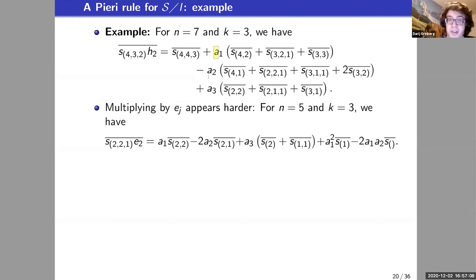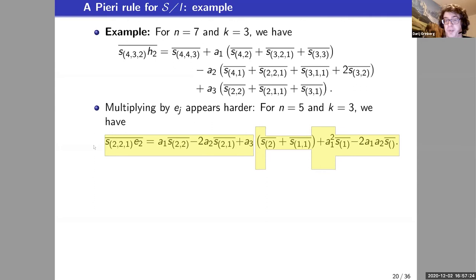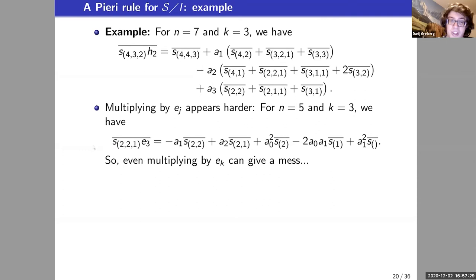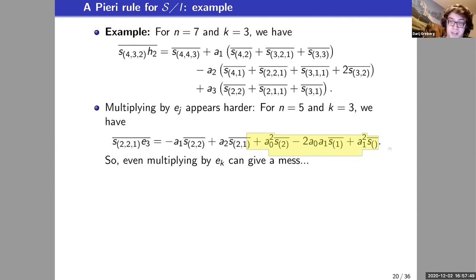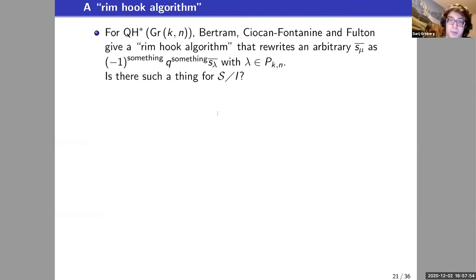Notice that the Littlewood–Richardson coefficients appearing here can be greater than one, so this is not a multiplicity-free rule. As for multiplying by an e instead of an h: in classical symmetric function theory there is a complete symmetry between the two; in cohomology there is still a symmetry (swapping k with n-k); even in quantum cohomology Postnikov showed the symmetry persists. But that symmetry is not obvious here — in the Pieri rule for the h's you get only linear terms in the a_i, whereas for the e's you get squares, and I don't even have a conjecture for the general rule.